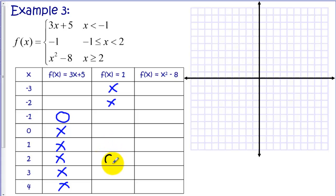And when we get to 2, we're going to have an open circle. And then we're done with that function. And here we start at 2. So everything above 2, we will be crossing out.